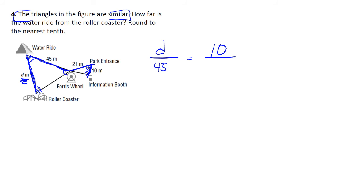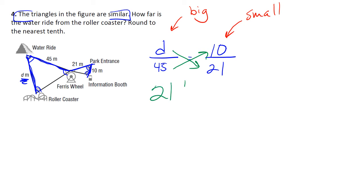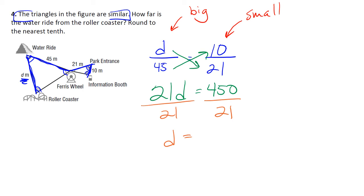We're also given a measurement of 21 meters. So we have our big triangle information and our small triangle information. All we have to do is cross multiply to figure out our distance. We have 21D equal to 450. Dividing both sides by 21, 450 divided by 21 gives us — rounding to the nearest tenth — 21.4 meters.